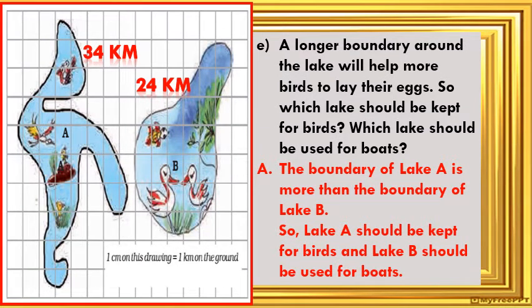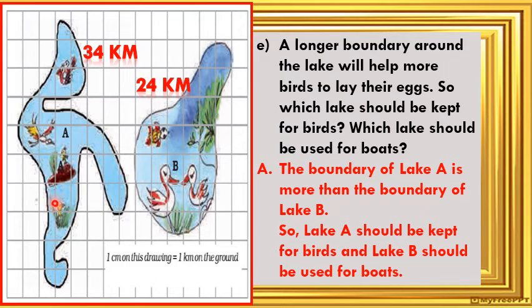Exercise E: It is a fact that a longer boundary around the lake will help more birds to lay their eggs. So which lake should be kept for birds and which lake should be used for boats? The length of boundary of Lake A is 34 kilometers and the length of boundary of Lake B is 24 kilometers. So the boundary of Lake A is more. Therefore, Lake A with the longer boundary should be kept for birds, and Lake B with the shorter boundary should be used for boats.